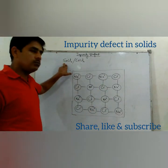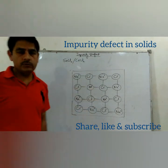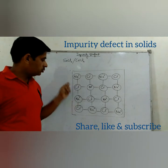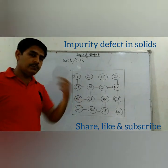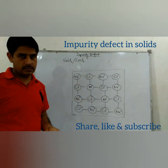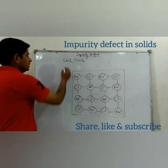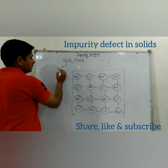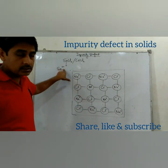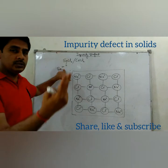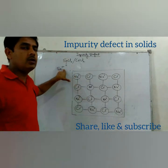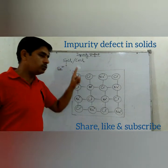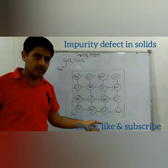When we add strontium chloride into the molten form of sodium chloride, some of the Na⁺ ions are displaced by Sr²⁺ ions. As we know, in strontium chloride we have Sr²⁺ ions with a 2+ charge. That means it will displace 2 positive charges from the crystal of sodium chloride.